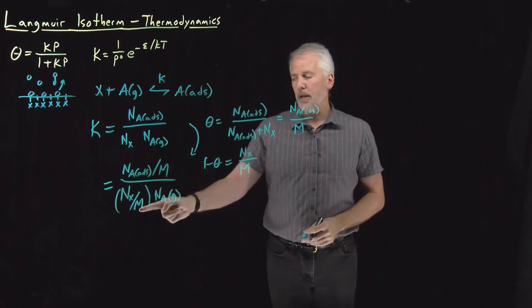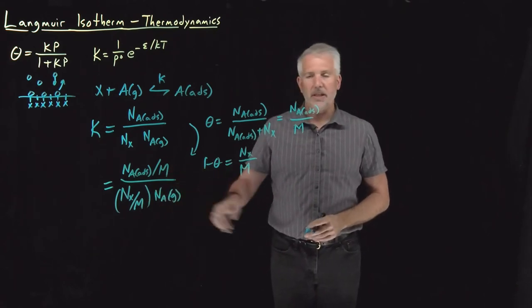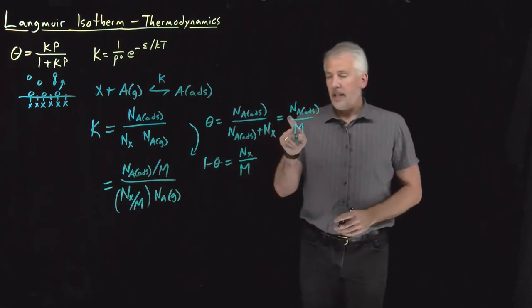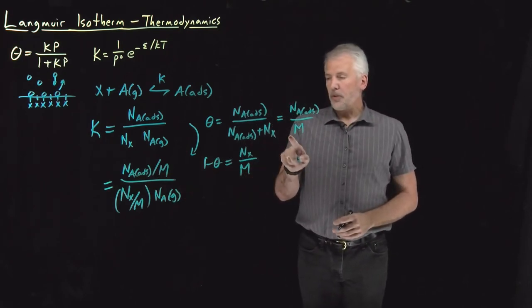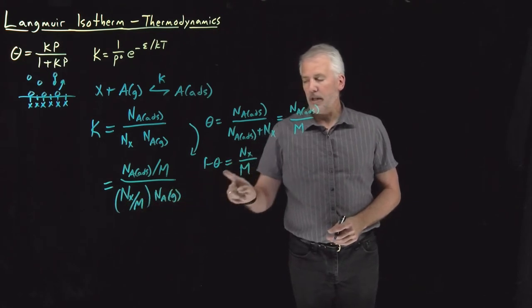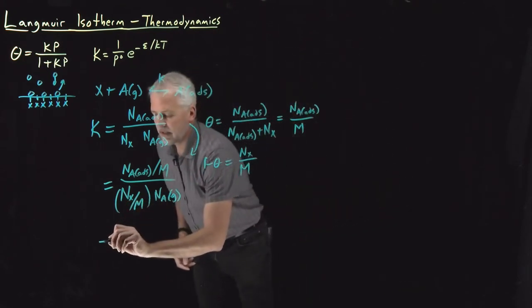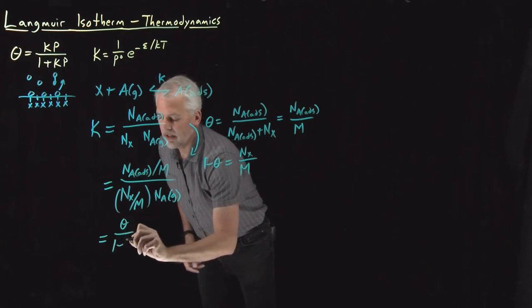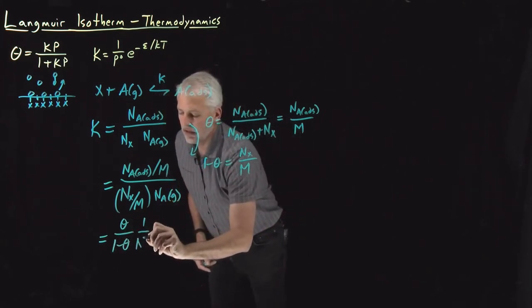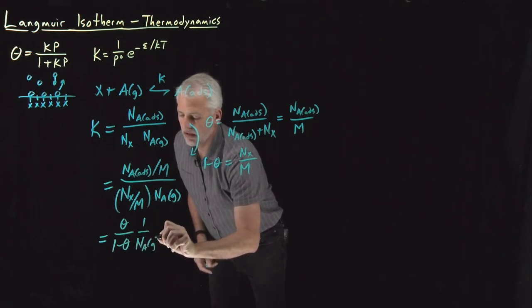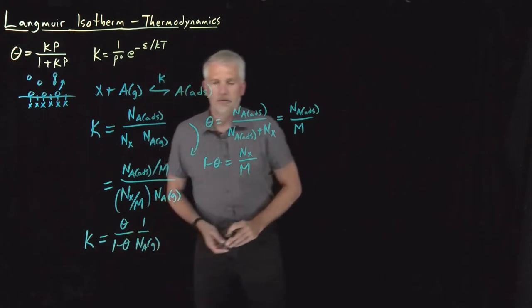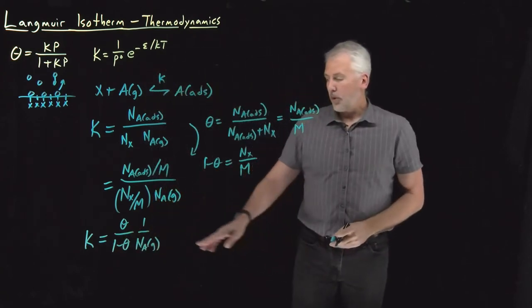So all I've done is divide on top and bottom by m, so that didn't change the value of this fraction. But it does allow me to say adsorbed over total is equal to theta. In the denominator, unoccupied over m is equal to 1 minus theta. So I can write this as theta over 1 minus theta, and I have a 1 over n.